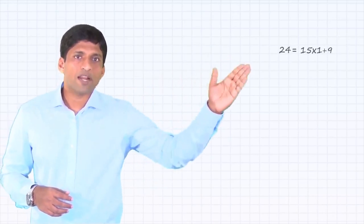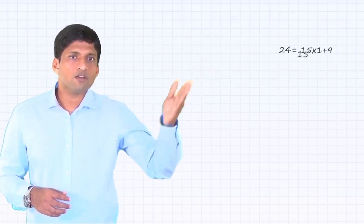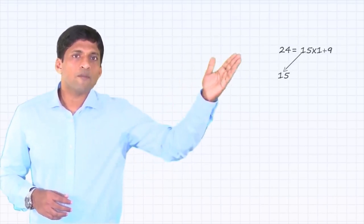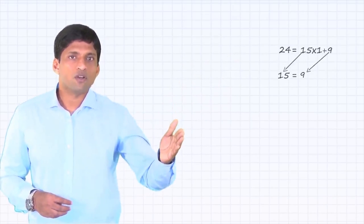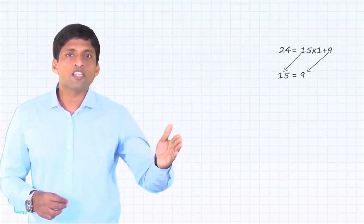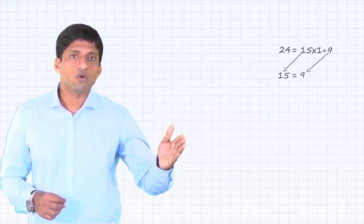First step is 24 divided by 15. You write it as 24 = 15 × 1 + 9. Next, this 15 will become the dividend and the remainder 9 will become the divisor. You'll continue doing this process till you get a remainder of 0.